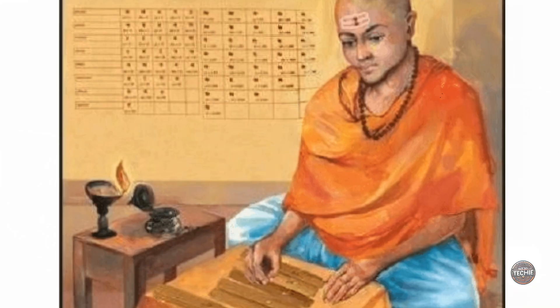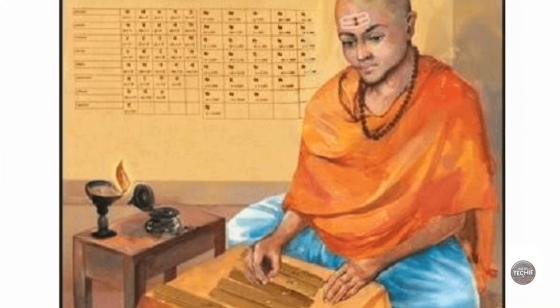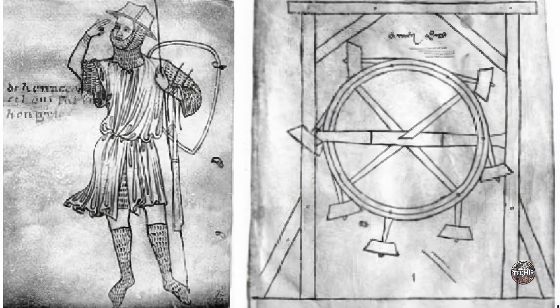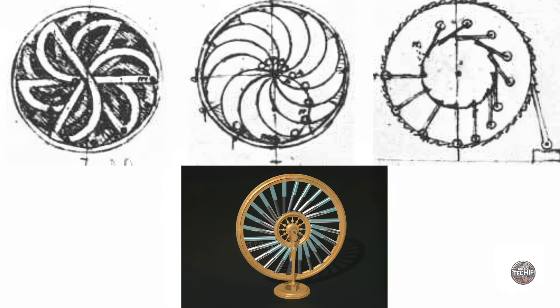Since the 7th century, starting with the Indian mathematician Brahmagupta, various inventors, including Villard de Honnecourt, have created different designs, such as overbalanced wheels and weight mechanisms.